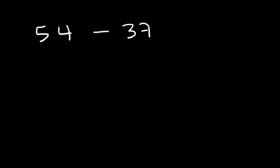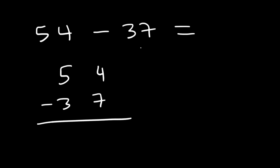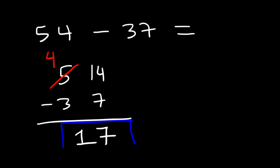Try this example: 54 minus 37. Notice that if we subtract 4 by 7, we get negative 3, so that's a problem. We need to borrow a 1 from the 5, which changes to 4, and 4 becomes 14. 14 minus 7 is 7, and 4 minus 3 is 1. So the answer is 17.